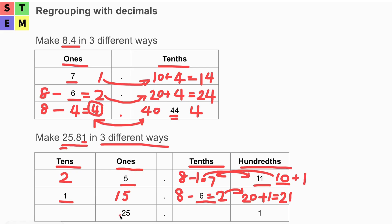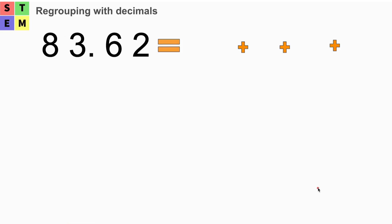In the final row, we have 25 at the ones place, so nothing is left at the tenths place — that's zero. At the hundredths place we have one, and at the tenths place we have eight. Nothing needs to change there, so it stays eight.